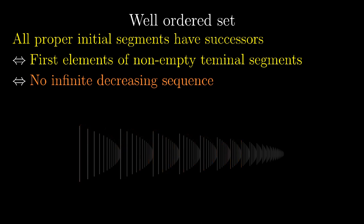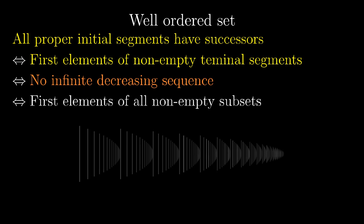But if you look up the definition of well-ordering by yourself, you will probably find the following one: not just every non-empty terminal segment, but every possible non-empty subset has its first element. So, you can think about why the meaning is still the same. It is not so difficult.